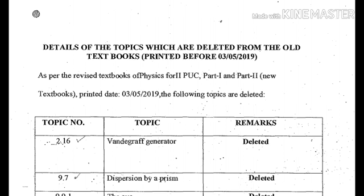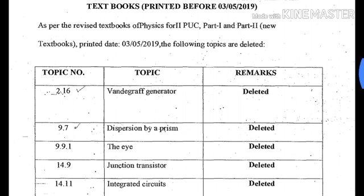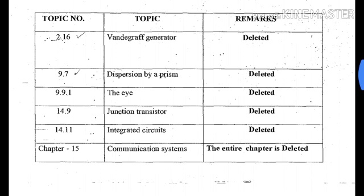First, I will show you the topics. First and second chapter: Vangraph Generator. In the ninth chapter: Dispersion by Prism — the topic is deleted. In chapter 14, the Junction Transistor topic is deleted. The entire chapter 14 system is deleted.